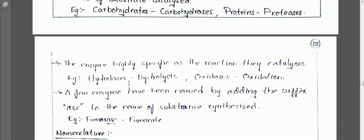In the early days, there was no proper naming method for enzymes. The naming system used to be based on the scientist who identified the enzyme — that enzyme would be called after the scientist who discovered it. Examples of this kind of naming include pepsin, trypsin, chymotrypsin, and pepine.